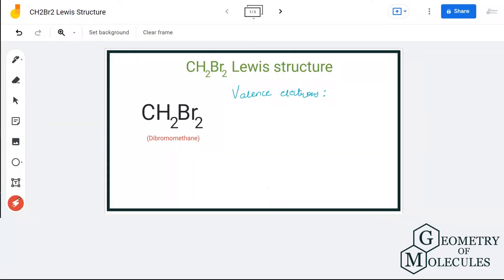Hi guys, welcome back to our channel. In today's video we are going to help you with CH2Br2 Lewis structure. It is a chemical formula for dibromo methane, and to determine its Lewis structure we will first look at the total number of valence electrons.